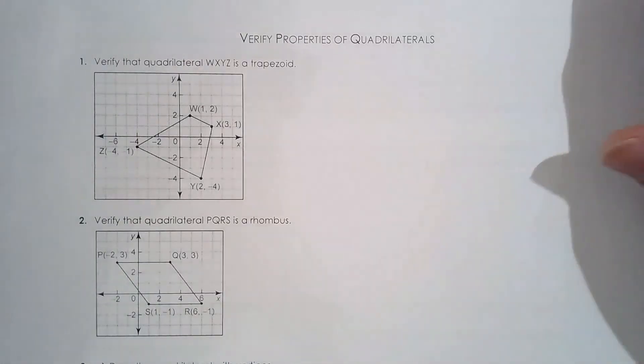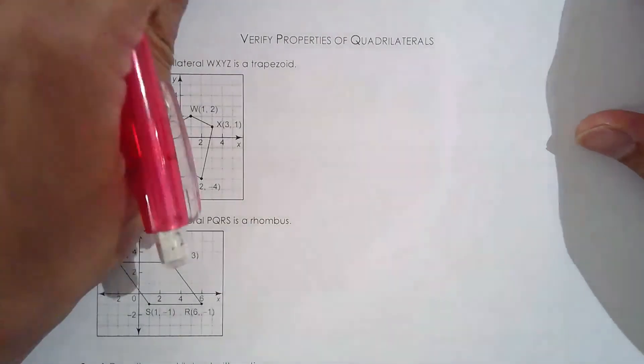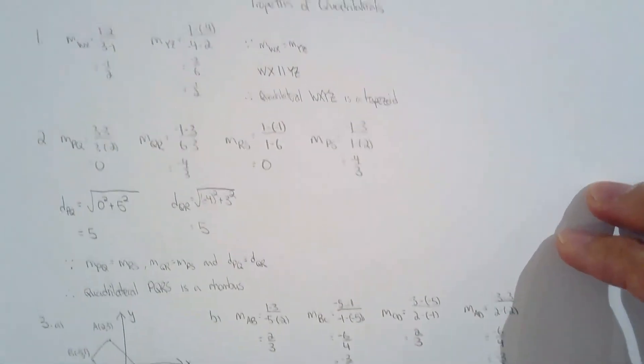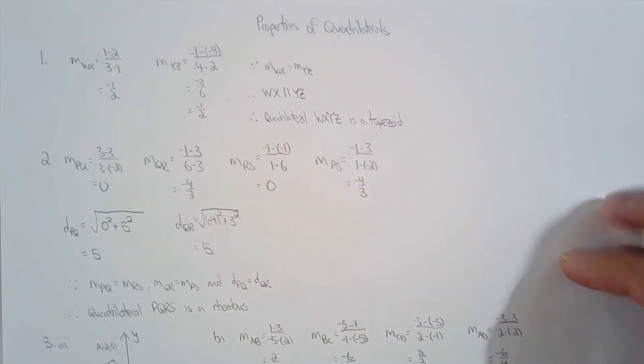In this video, we will take up the homework sheet on verifying properties of quadrilaterals. On the first question, they ask us to verify that the quadrilateral is a trapezoid, so all I have to do is find one pair of opposite sides which are parallel to each other. That's what I did.